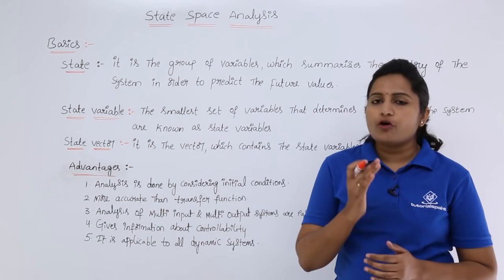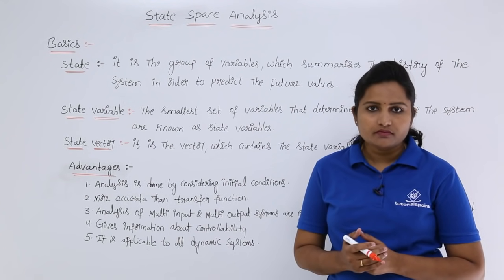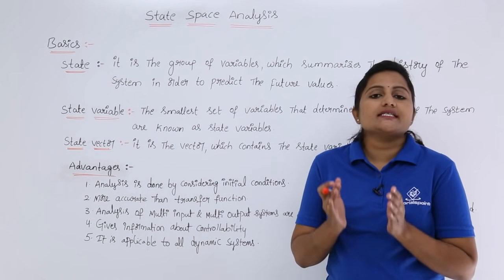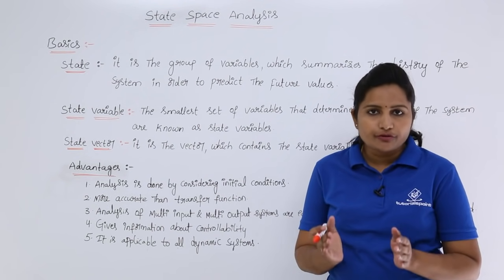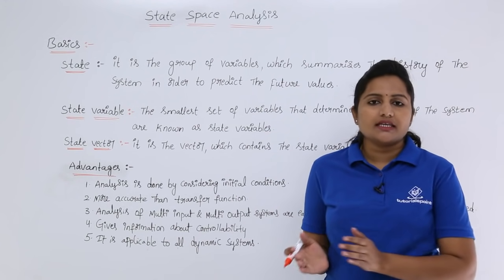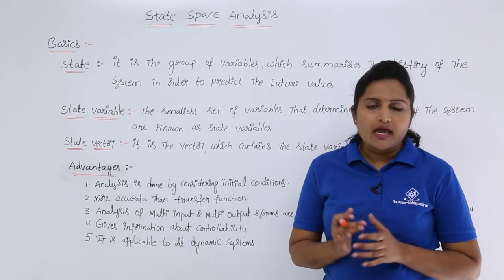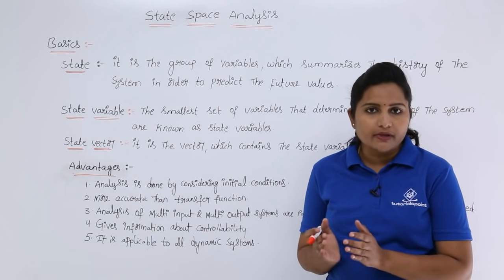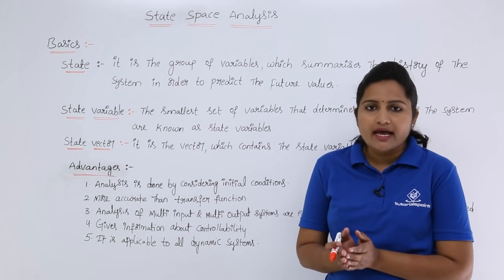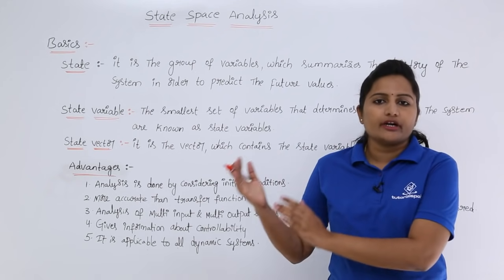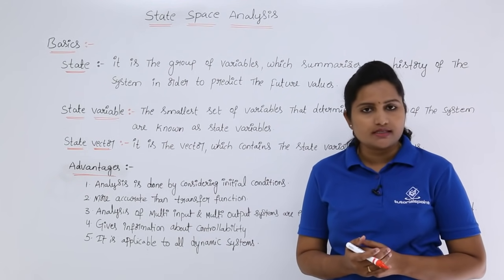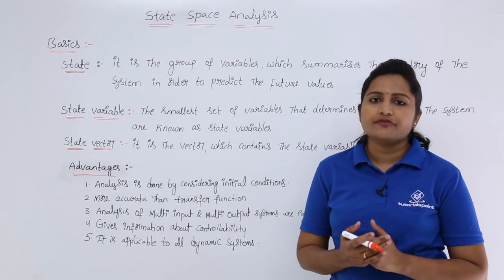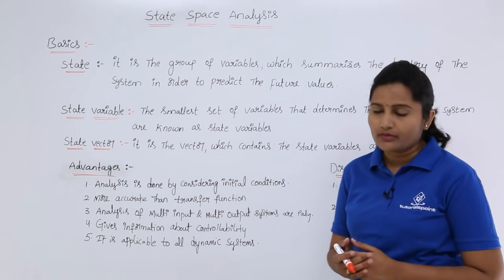For example, if you are having any dynamic system and you know the system at t equal to t0, that means at initial conditions, those initial conditions came because of the history of that system. And the system response at t equal to t0 — if you apply t greater than or equal to t0 values, by that we can predict the future values of the system.